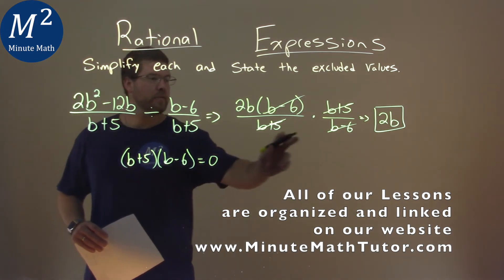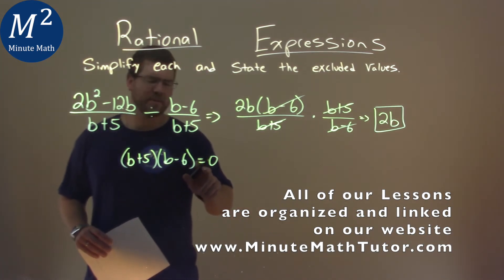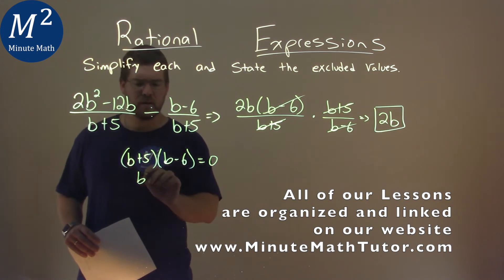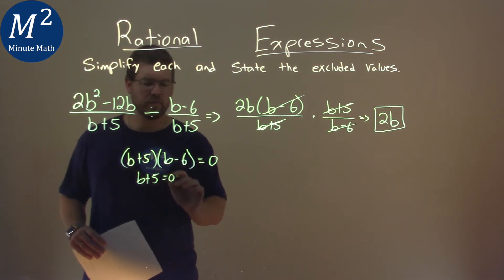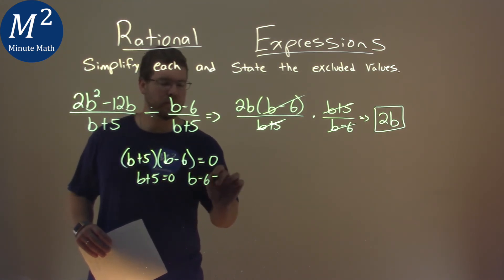We set the b plus 5 times b minus 6 in the denominator equal to 0, and we're solving. Set each one individually equal to 0, b plus 5 equals 0, and b minus 6 equals 0.